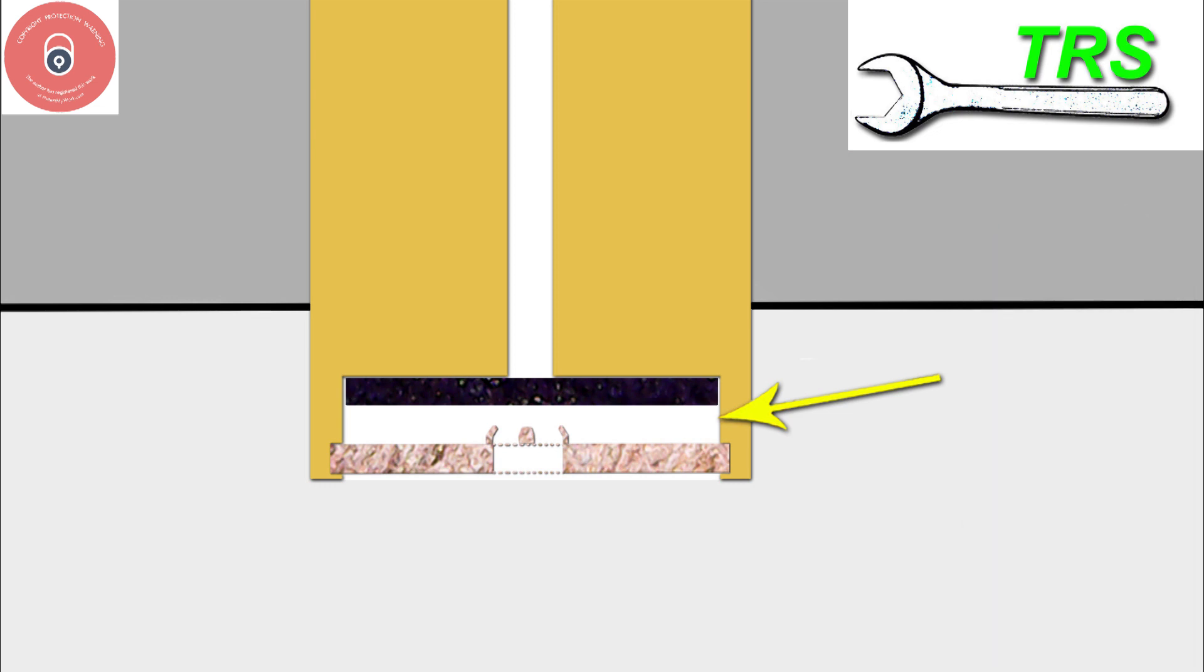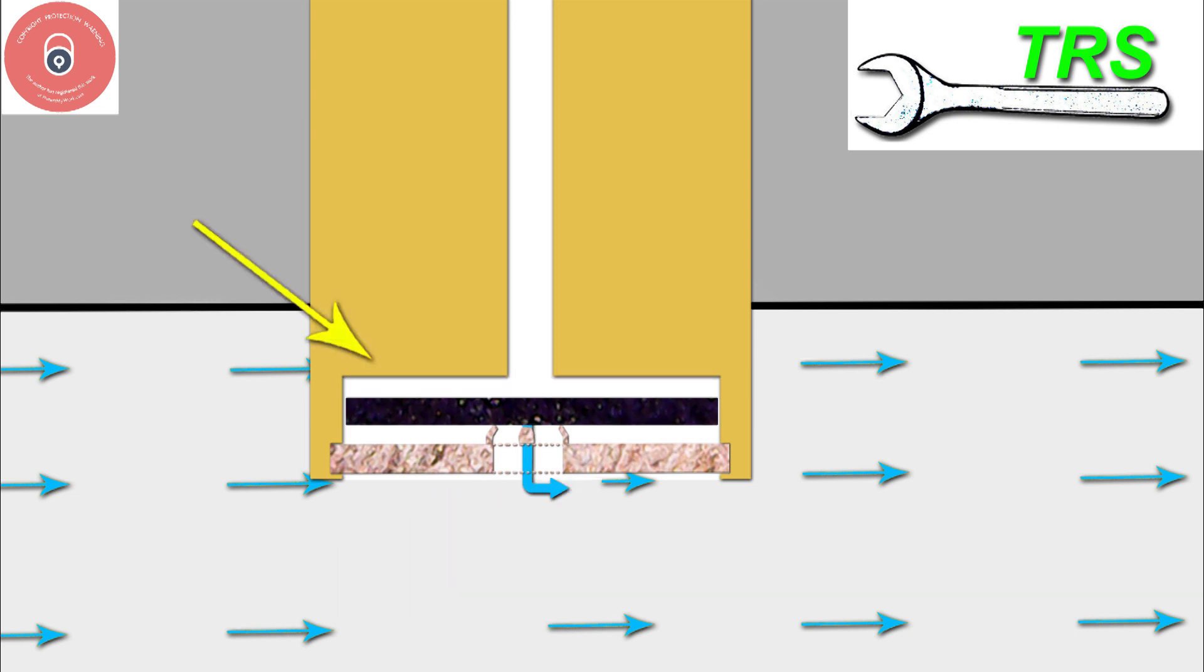When the engine starts and the vacuum from the piston lowering on the induction stroke in the engine draws air in through the Venturi, that vacuum is also felt here which pulls hard down on the neoprene rubber disc.